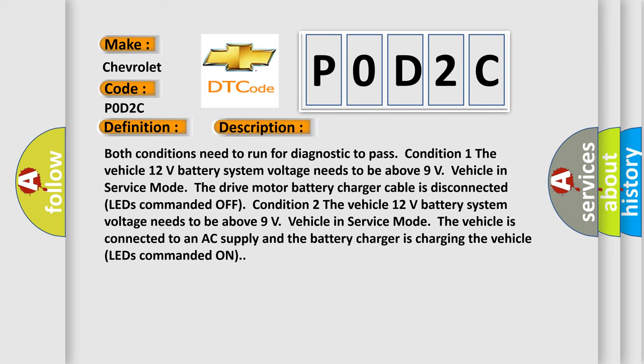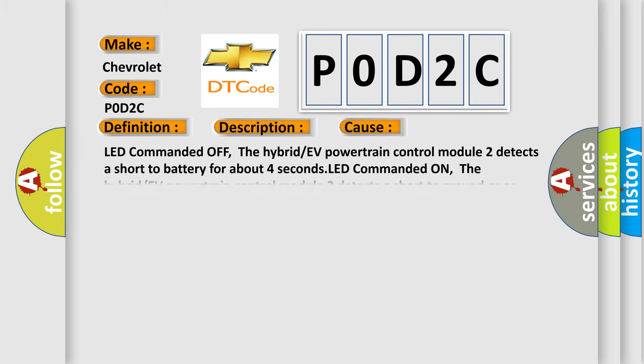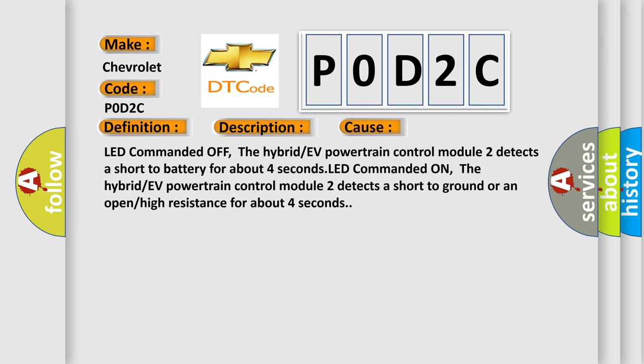This diagnostic error occurs most often in these cases. With LED commanded off: the hybrid or EV powertrain control module 2 detects a short to battery for about 4 seconds. With LED commanded on: the hybrid or EV powertrain control module 2 detects a short to ground, or an open or high resistance for about 4 seconds.